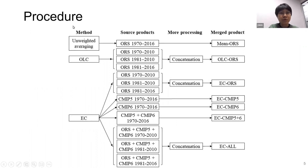This is the overview of the procedure. The three methods were applied on different combinations of source products, which we divided roughly into three sets based on time coverage: some covered the whole period of interest, some only until 2010, and some only from the 1980s onwards. Whenever datasets did not cover the whole period, we used CDF-based concatenation to derive the final product. As a result of testing different combinations, we derived seven products.